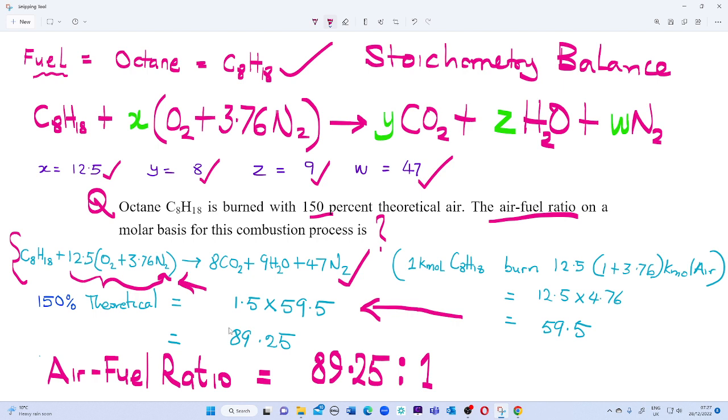From here we have one kilomole of octane C₈H₁₈ burned with 12.5(1 + 3.76) kilomoles of air. From there we can deduce that for one kilomole of octane C₈H₁₈, 12.5 times 4.76 moles were burned, so that gives us 59.5 kilomoles.